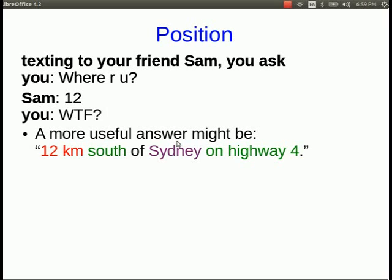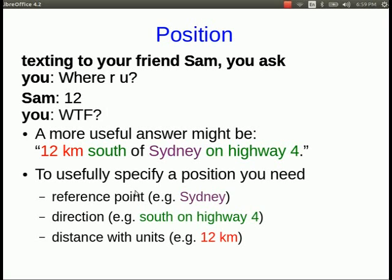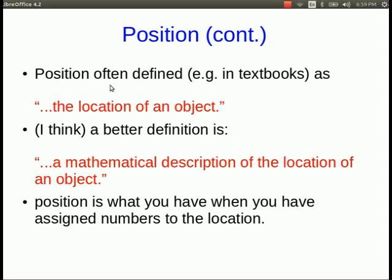So a useful answer would have included a reference point like Sydney, a direction like south on highway 4, and a distance with units. And those are the minimum you always need to provide whenever you're giving a position.